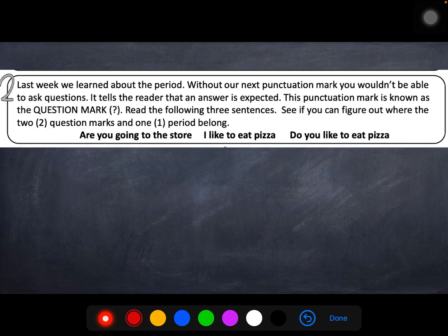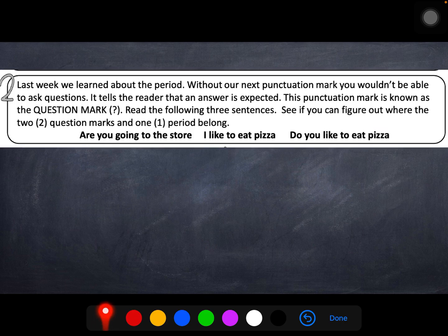Number 2. Last week, we learned all about the period. Without our next punctuation mark, you wouldn't be able to ask questions. It tells the reader that an answer is expected. This punctuation mark is known as the question mark. Read the following three sentences. See if you can figure out where the two question marks and one period belong. So, remember, it tells the reader that an answer is expected. Are you going to the store? Am I expecting an answer? Yes. So, question there. I like to eat pizza. Does that indicate that I'm expecting an answer? No. So, that one has a period. Do you like to eat pizza? That one definitely, I'm looking for an answer.